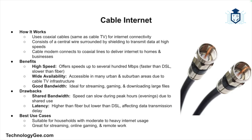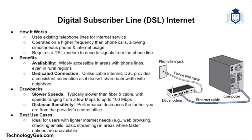Some drawbacks: cable internet has shared bandwidth — it is shared among multiple users in a neighborhood, meaning that during peak hours like evenings, speeds can slow down. Another drawback is latency, which is typically higher than fiber but lower than DSL. Cable internet is best suited for average households with moderate to heavy internet usage, including streaming, online gaming, and working from home.